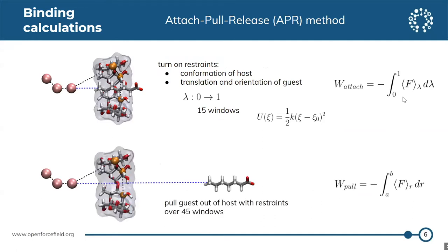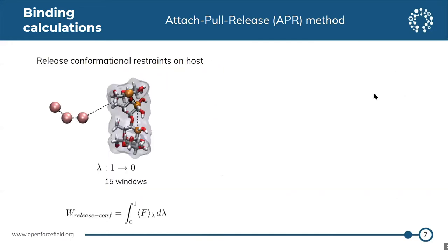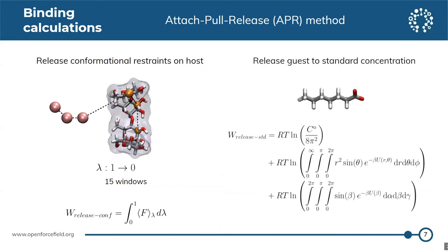In the pull phase, we pull the guest out of the host over 45 windows. Finally, in the release phase, we release the restraints we applied on the host in a similar manner as the attach phase, but in reverse. For the guest, we don't need to run a simulation for this because we can estimate it analytically.